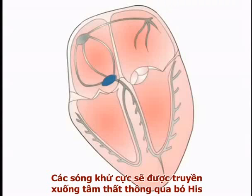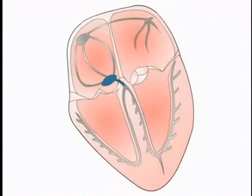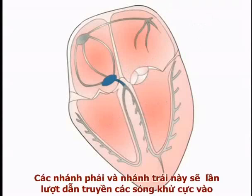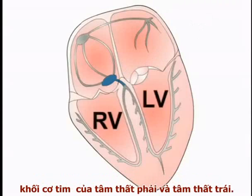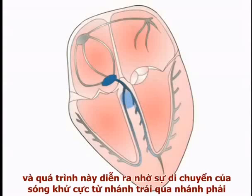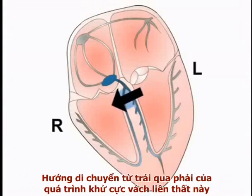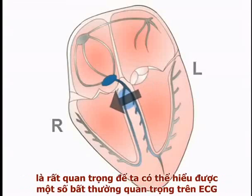After this short delay, the depolarizing signal is transmitted into the ventricles via the bundle of His. The bundle of His lies in the interventricular septum and divides into right and left bundle branches, which transmit the depolarizing signal into the muscle mass of the right and left ventricles respectively. The interventricular septum is the first part of the ventricular muscle mass to depolarize, doing so by movement of current across the septum from left towards the right. This early left-to-right movement of current in the septum is crucial to understanding several important ECG abnormalities.